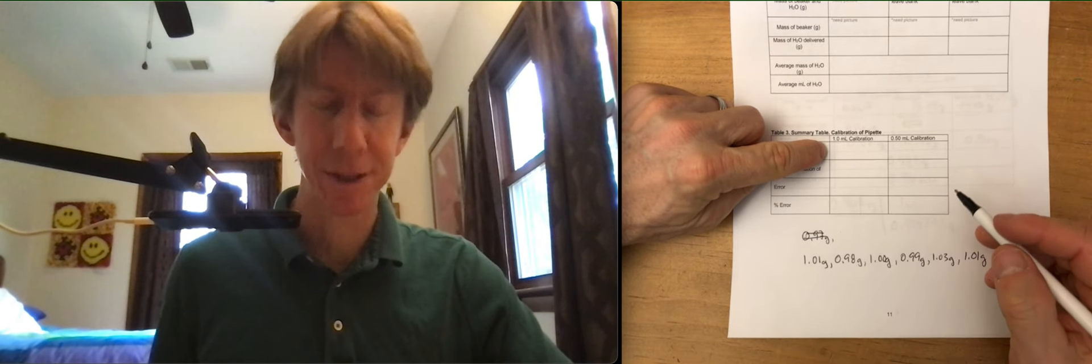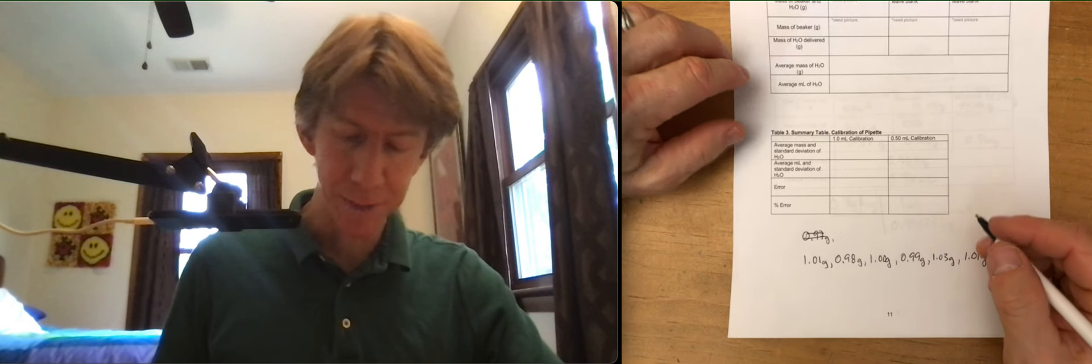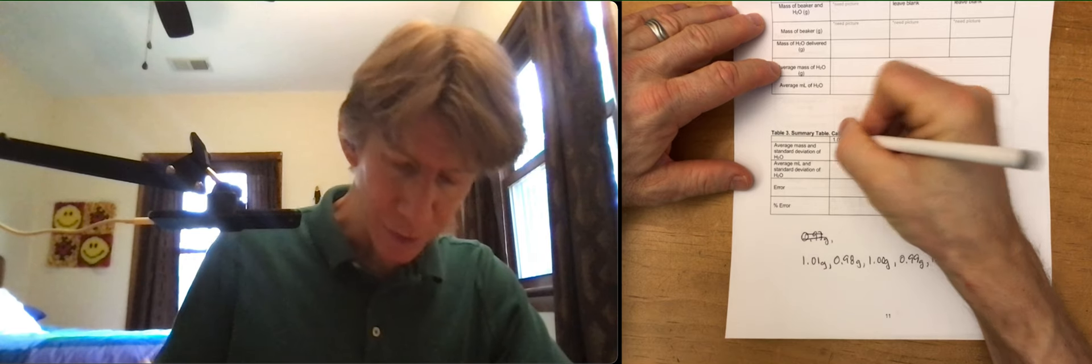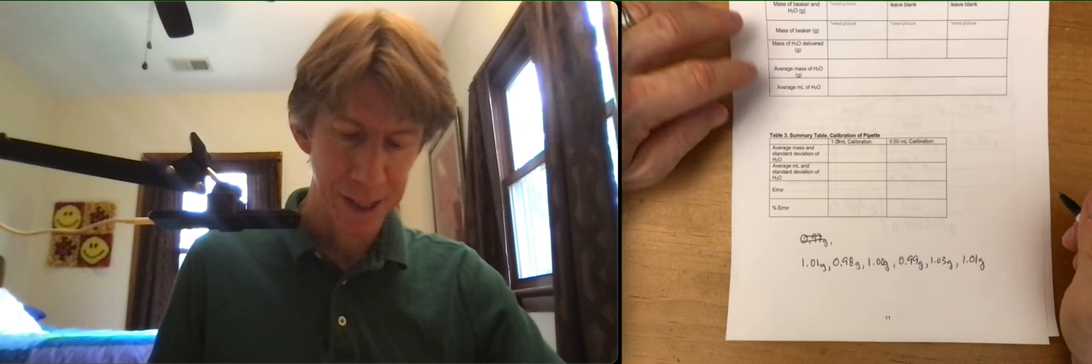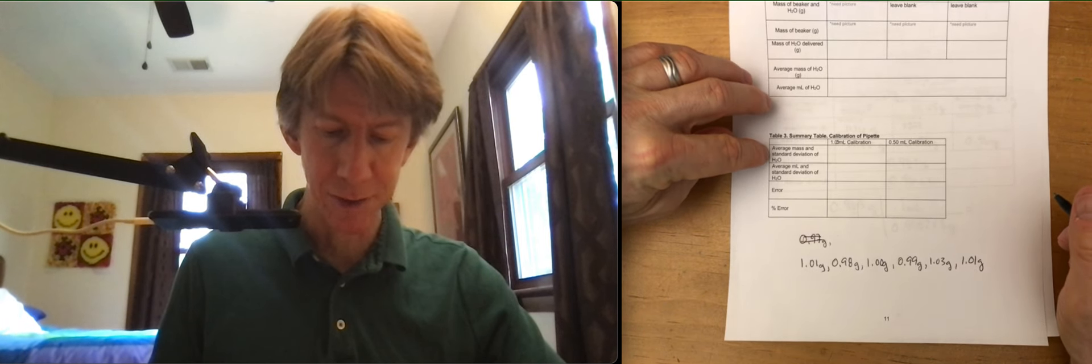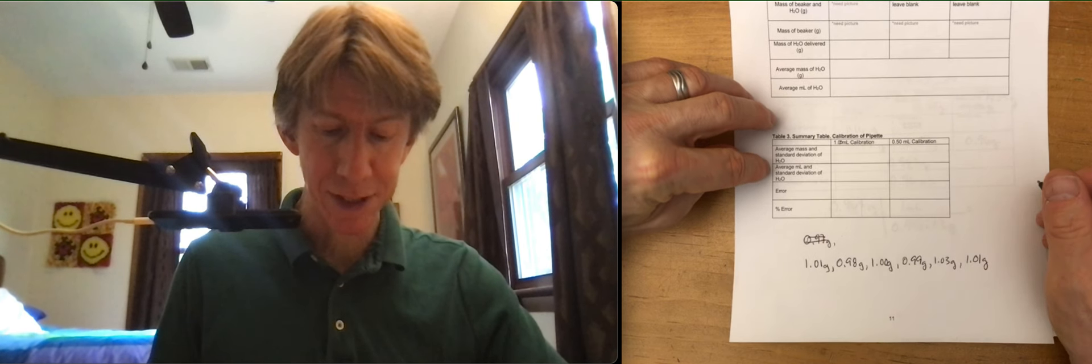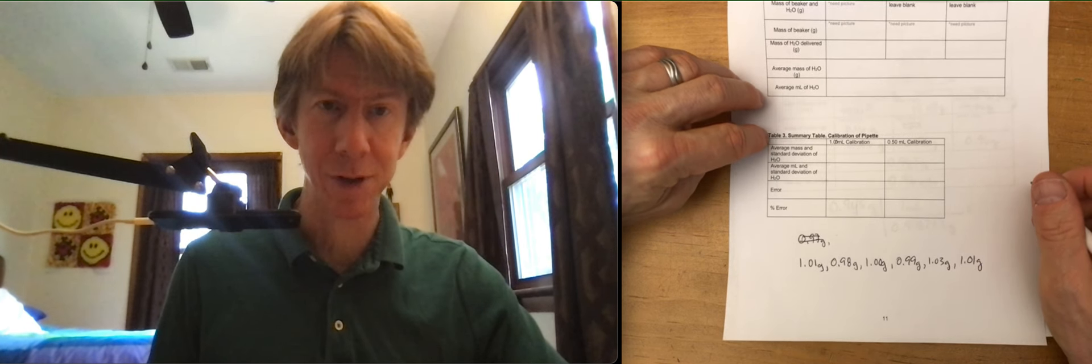Now I only did the one milliliter one and for the one milliliter which we will find is 1.00 milliliters the average mass and standard deviation of H2O, average milliliters and standard deviation of H2O. Let's go ahead and do those.